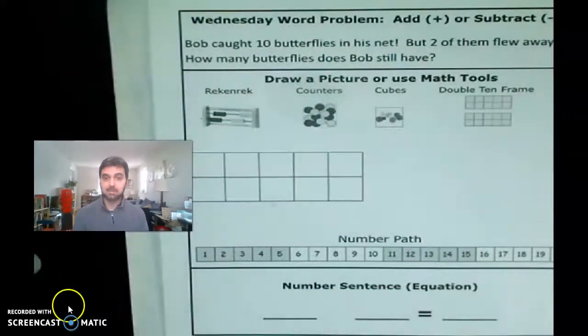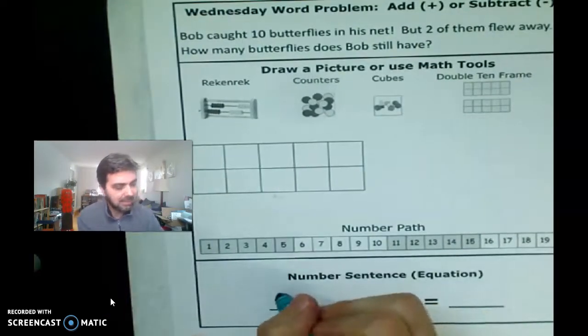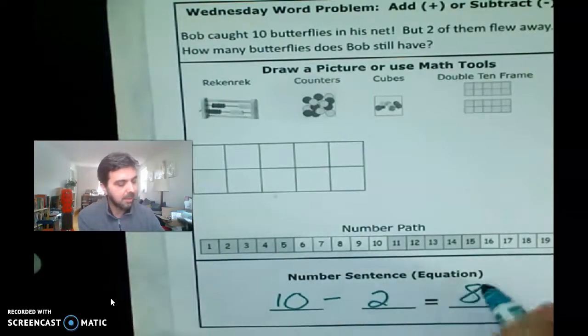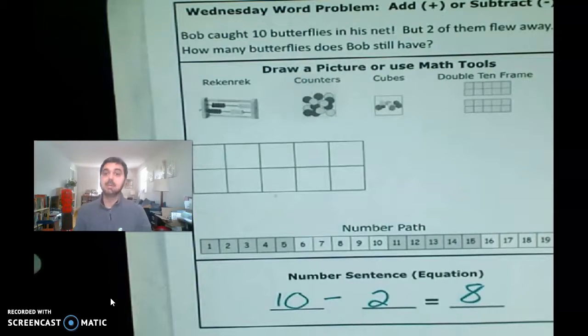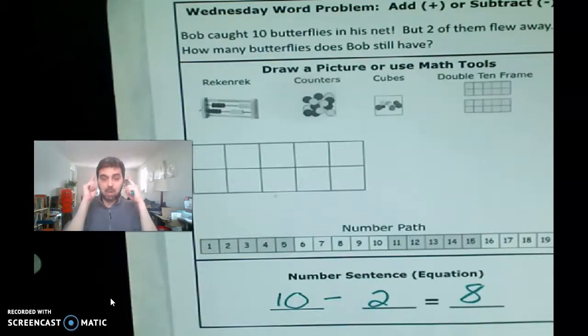All right, so how did we do? Did we all get the answer of eight? That's right, the answer is eight. So if we have 10 butterflies and two fly away, okay, you should have gotten eight. Now, if you got the right answer, great. My challenge to you is to see if you can solve it in another way. If you did not get the right answer, that's fine. As long as you pay attention and learn from whatever mistake you might have made. Your brain will grow just as much, actually more, okay, if you make a mistake and then you fix it and then you figure it out. Okay, all right.